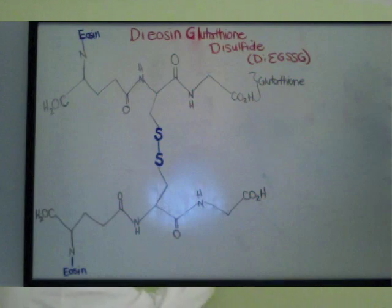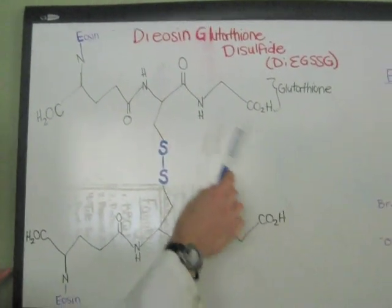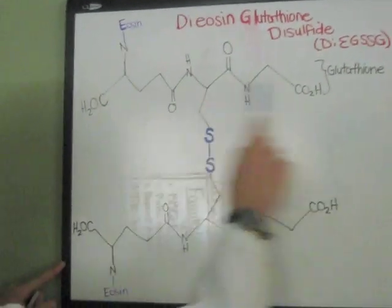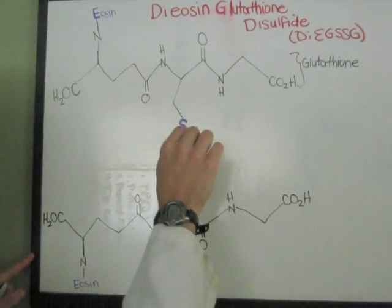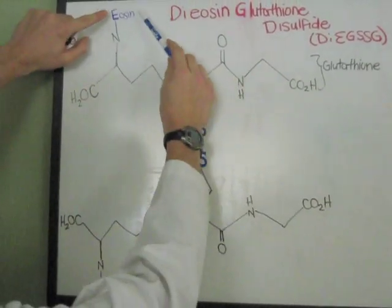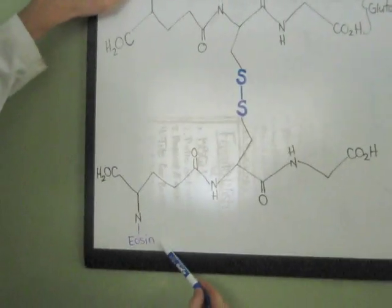Hello everybody. We have ourselves the wonderful di-eosin glutathione disulfide molecule right here. It consists of two glutathione molecules that have been connected through a disulfide bridge. We also have eosin, which is here and here.